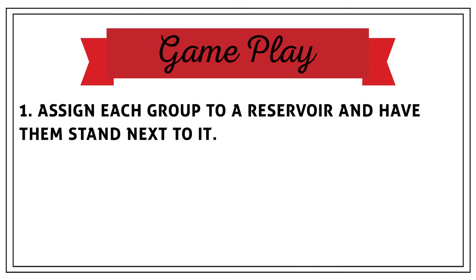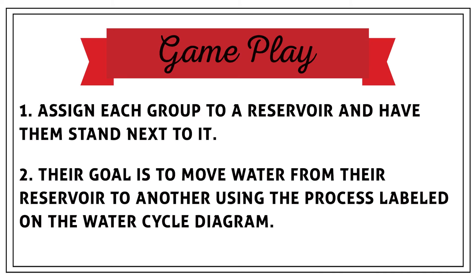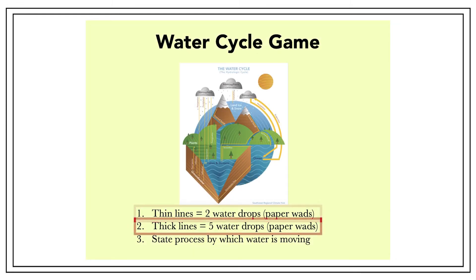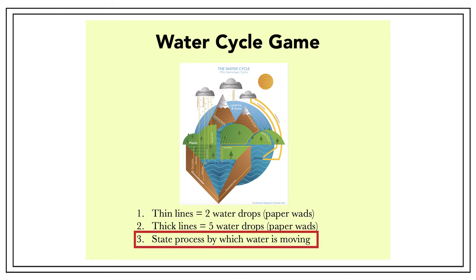Assign each group to a reservoir and have them stand next to it. Their goal is to move water from their reservoir to another using the process labeled on the water cycle diagram. Students can move two water drops into reservoirs connected to theirs with a thin arrow, and five water drops into ones connected by thick arrows. They'll need to throw the correct number of paper balls into the reservoir and say the name of the process that's occurring to move water. Have groups take turns one at a time throwing water drops into the correct reservoir.